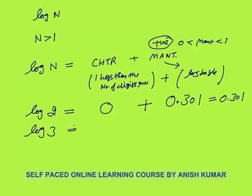Log 3 is a single-digit number, so characteristics is 0 and the mantissa is 0.477. You need to remember these two values — log 2 = 0.301 and log 3 = 0.477 — because sometimes in exams these values are not given.